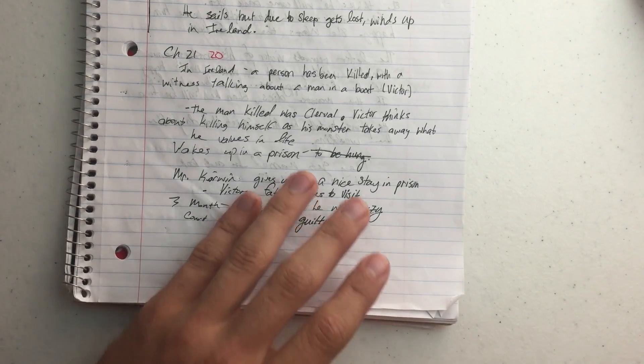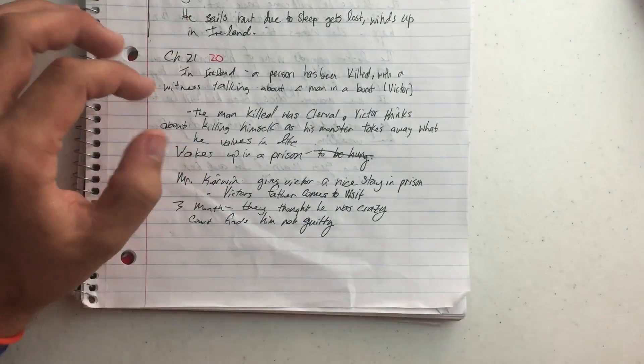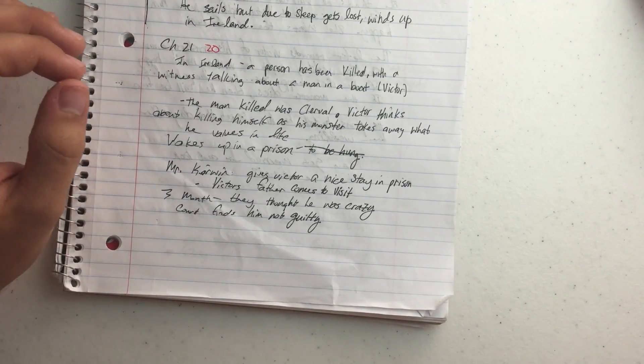All the people think he did it in the city of Ireland, or in that town. The person that was killed, also interesting, was Clerval, Victor's friend.